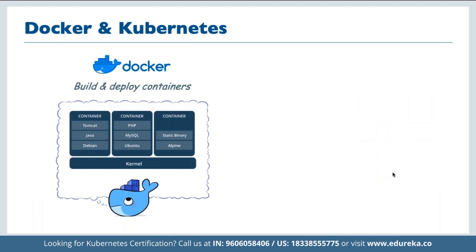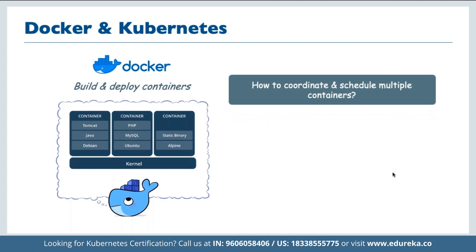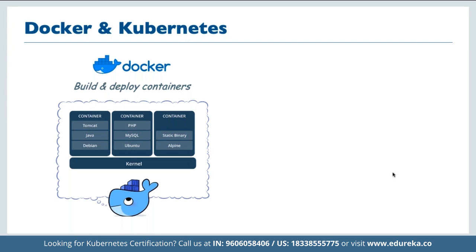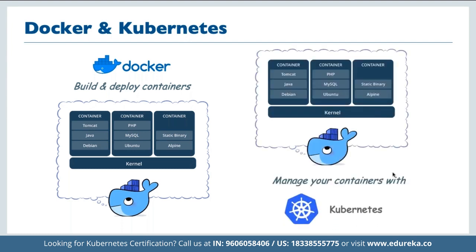Docker is the most popular containerization tool for building and deploying containers. For coordinating, scheduling, and scaling multiple containers, and handling failed containers, we use a container management tool. Docker Swarm is ideal for small-scale applications, but for large clusters of containers, Kubernetes comes into play. Docker is the tool for creating containers, and Kubernetes is the tool for managing large numbers of those containers.